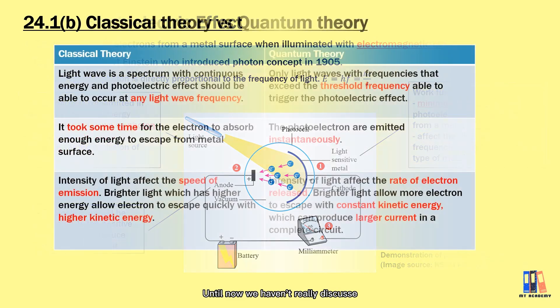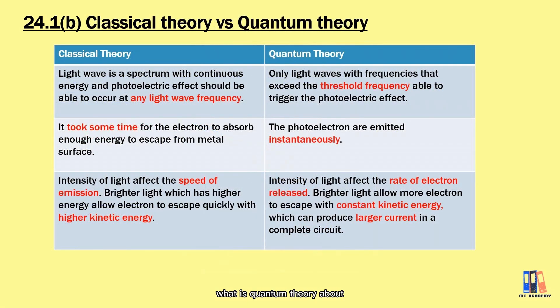So until now, we haven't really discussed what quantum theory is about. It is a theory used to explain something that cannot be explained by the classical theory, such as the photoelectric effect. If we refer to classical theory which mentioned the light wave is a spectrum with continuous energy. Think of something like we dry our clothes under the sun or other light sources. The light which also carry heat energy able to dry our clothes at any frequency and it just took some time for the clothes to dry.